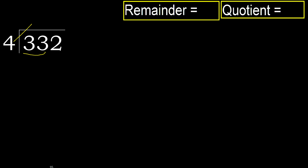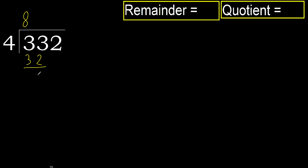But not greater. 4 multiplied by 9 is greater. Multiplied by 8 — 32 is not greater. Ok, subtract.